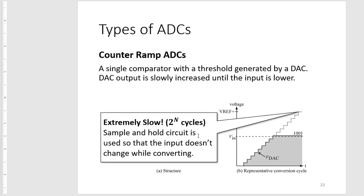The problem here is it will be extremely slow. For a three-bit counter ramp ADC, we will be needing at least eight cycles. For a 10-bit ADC, we need a whopping 1024 clock cycles. Maybe even a sample and hold circuit may not hold that voltage for so long.